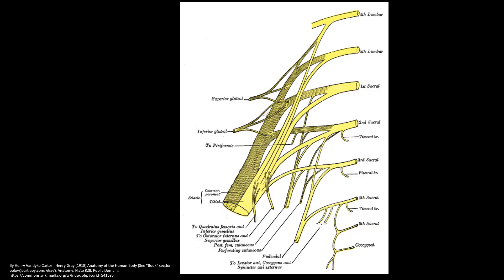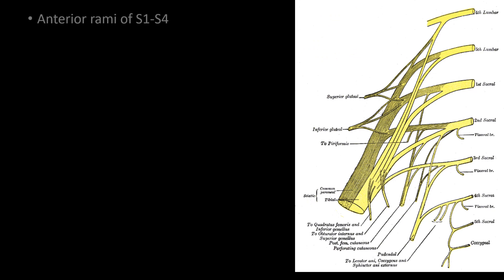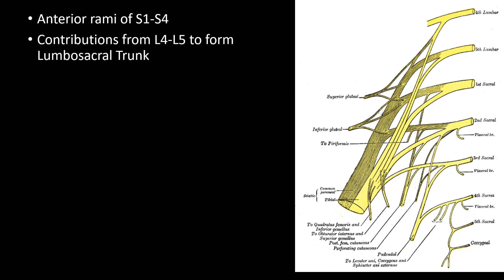Let's look at the anatomy of the sacral plexus. The sacral plexus is formed by the anterior primary rami of S1 to S4 sacral nerves. In addition, they receive contributions from L4 and L5 to form the lumbosacral trunk. The sacral plexus has dorsal and ventral divisions.